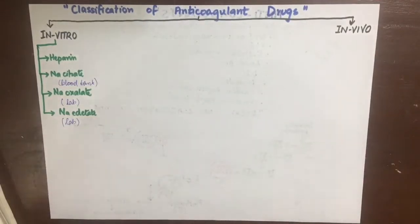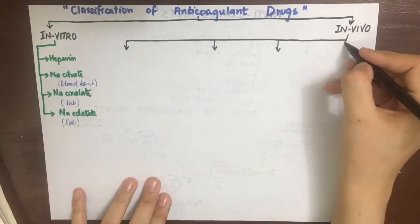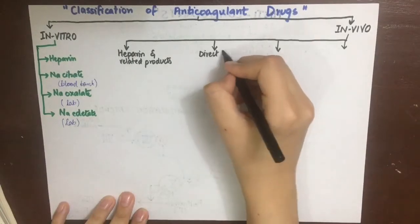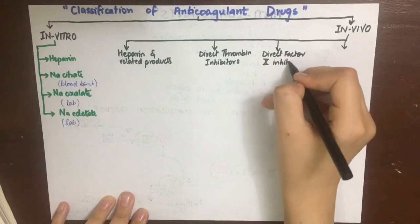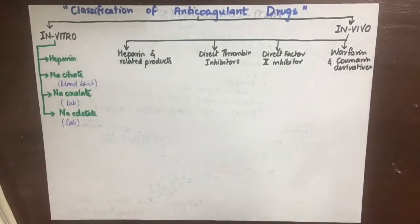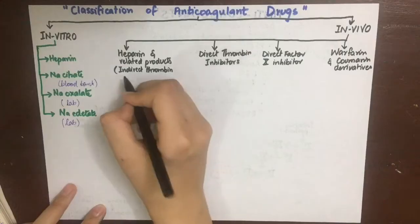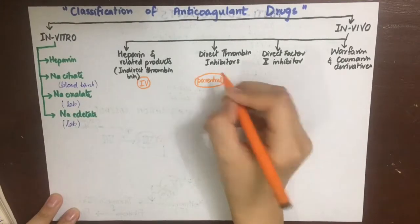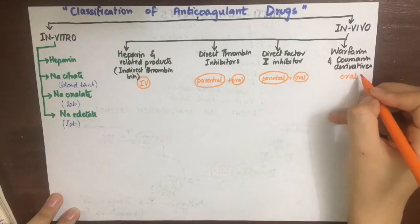Our main concern is the in vivo drugs, which are further divided into heparin and related products, direct thrombin inhibitors, direct factor 10 inhibitors, and lastly warfarin and coumarin derivatives. Heparin and related products are given IV, direct thrombin inhibitors can be given parenterally and orally, direct factor 10 inhibitors can be given parenterally and orally, and warfarin is only given orally.